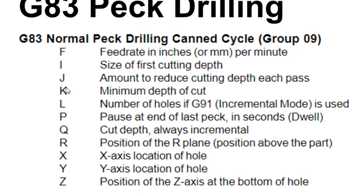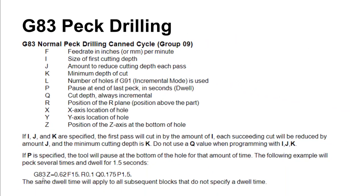The I, J, and K parameters are a separate option for specifying the peck drilling increment — just ignore those for now, we'll unpack that during the assignment. The X and Y values are your hole locations. Once you're in the G83 peck drilling cycle, any subsequent X or Y coordinate will drill a hole there with the same parameters.